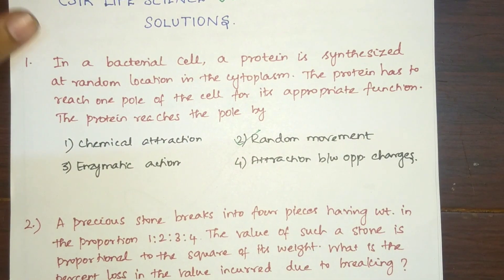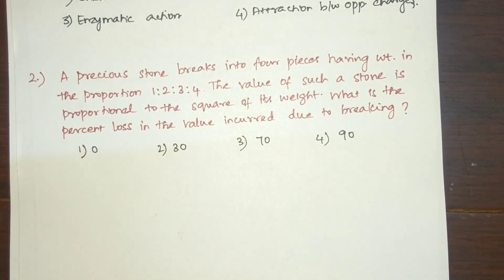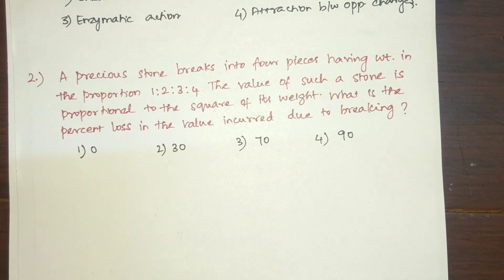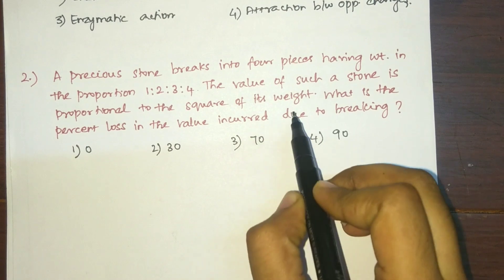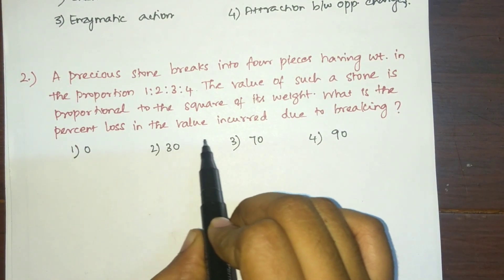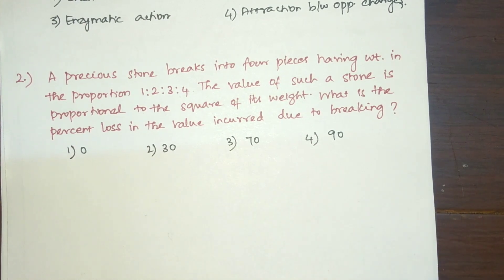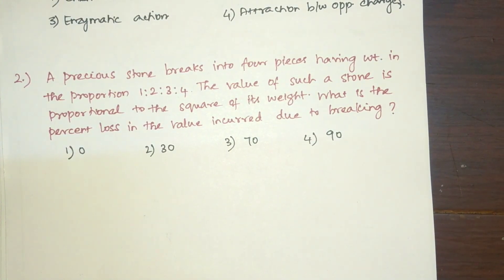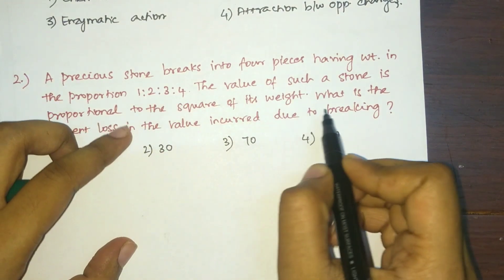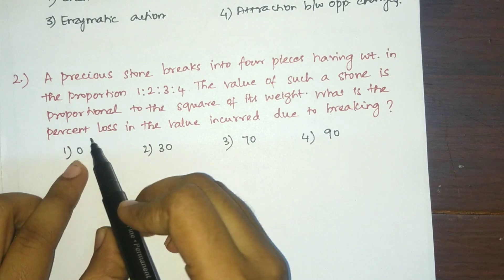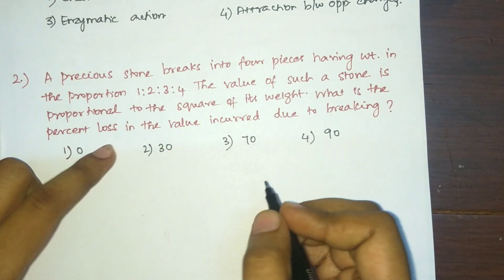The next question: a precious stone breaks into four pieces having weight in the proportion 1:2:3:4. The value of such a stone is proportional to the square of its weight. What is the percent loss in value incurred due to breaking? We have a big precious stone broken into four pieces in the given ratio, and the question asks us to find the percent loss in cost due to breakage.